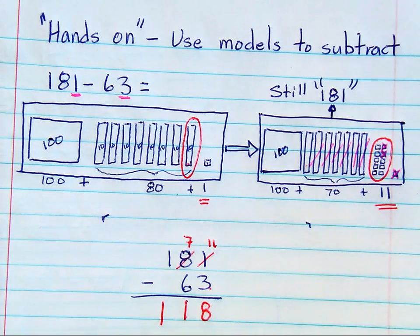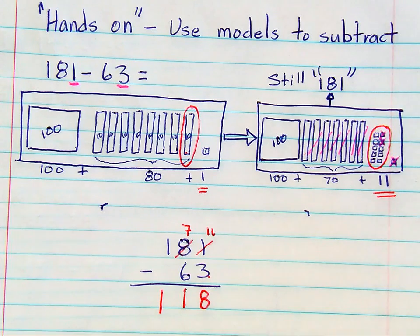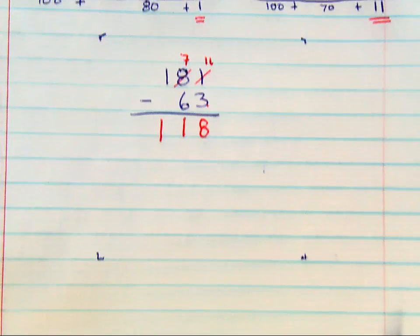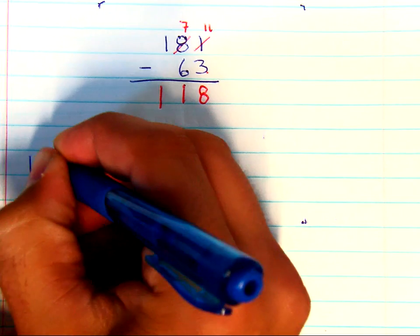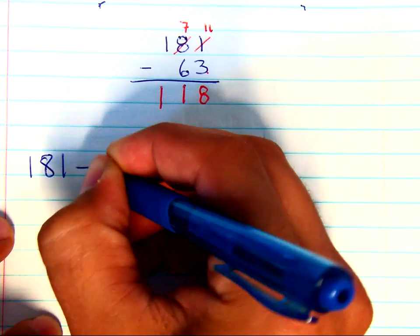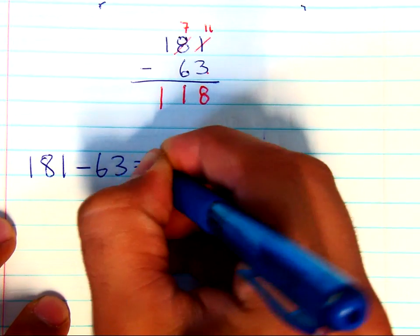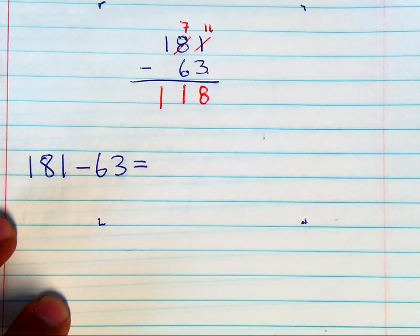So as you go through the textbook, you are going to be asked to show how 181 minus 63 is equal, but you are going to be asked to use models to subtract and draw the difference.